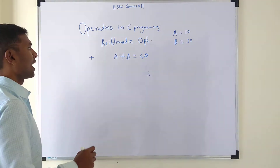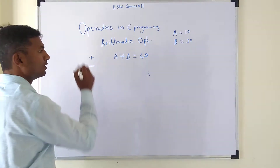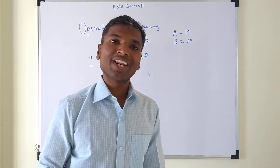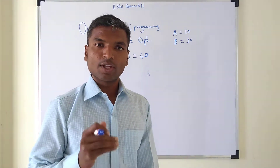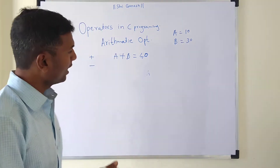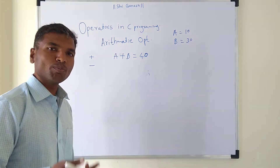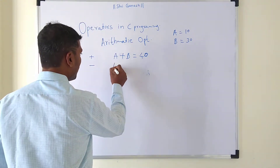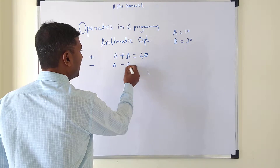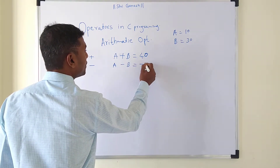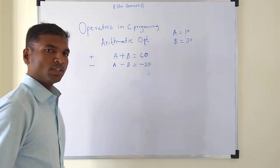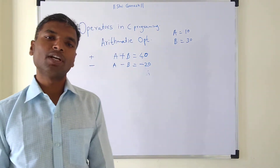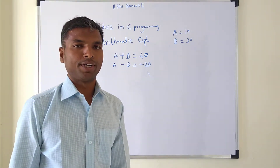The next operator in arithmetic operation is minus. This minus operator is also called a unary minus operator. Why is it called unary minus? Because you can use this minus operator with a single operand. So in this example, if we write down a minus b, the result is minus 20. So these are the plus and minus, also called unary plus and unary minus operators.